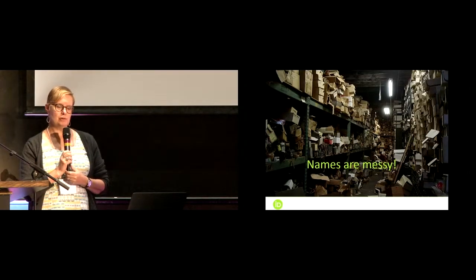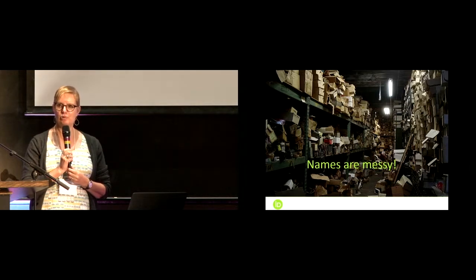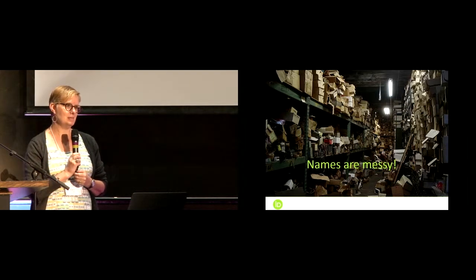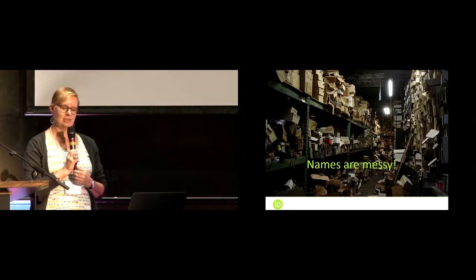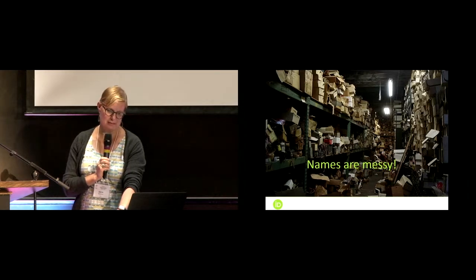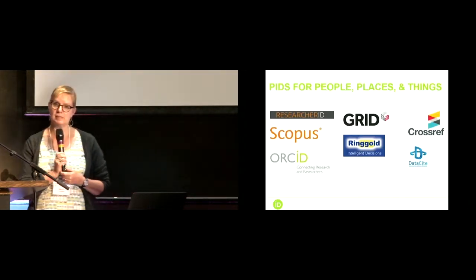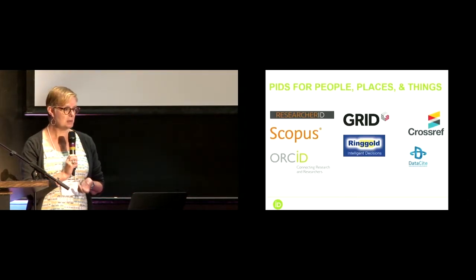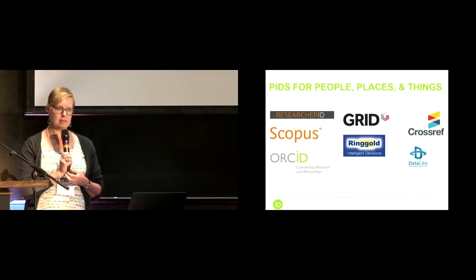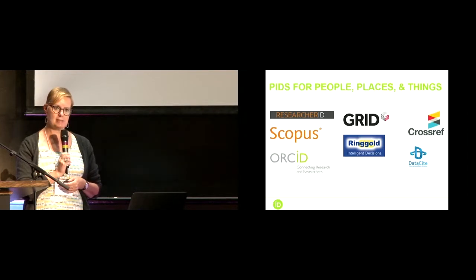I think we can probably all agree that names are messy. This is the reason why ORCID and other persistent identifiers exist. The same names can be used for different things; different things can have the same names. Names cause a lot of mess, basically. And that's why we have persistent identifiers, whether they're for people, as on the left-hand side, or for places, organisations in the middle, or for things. I'm sure these are all identifiers that you're quite familiar with.